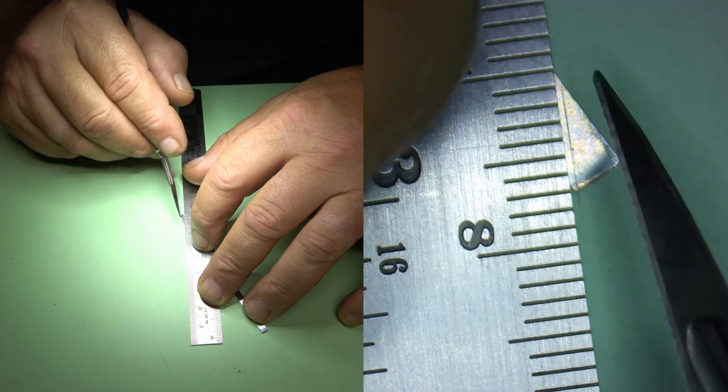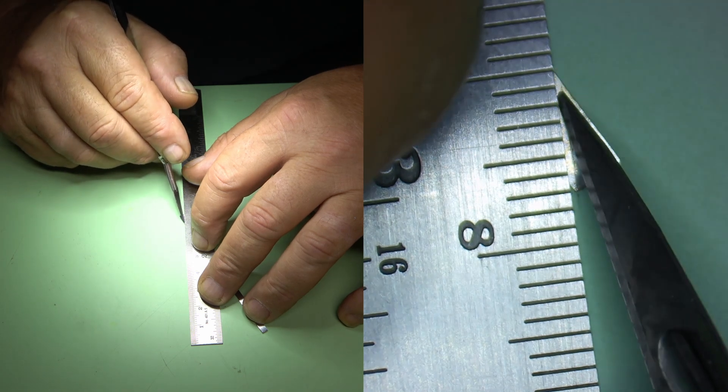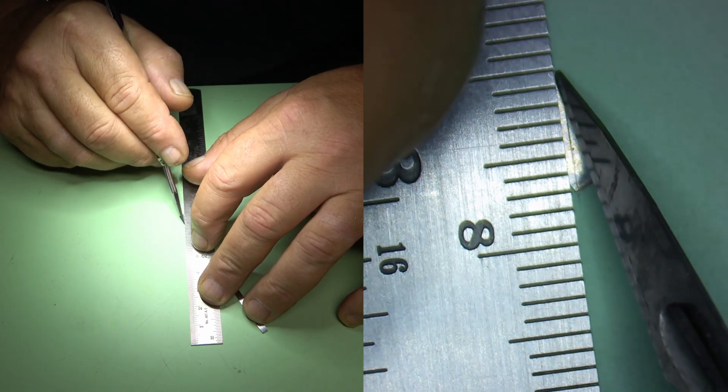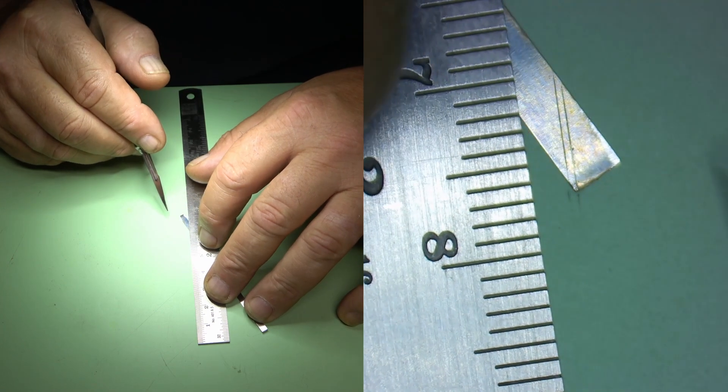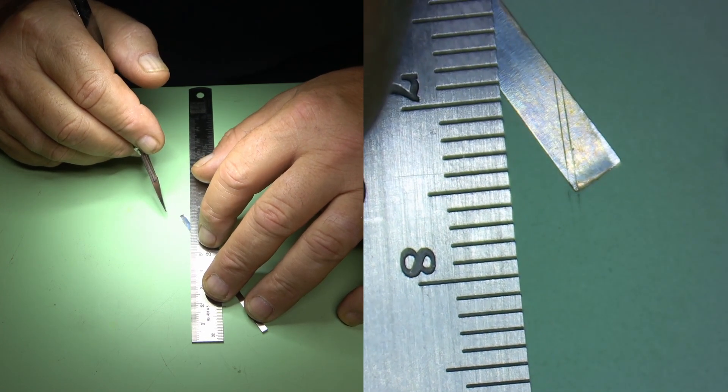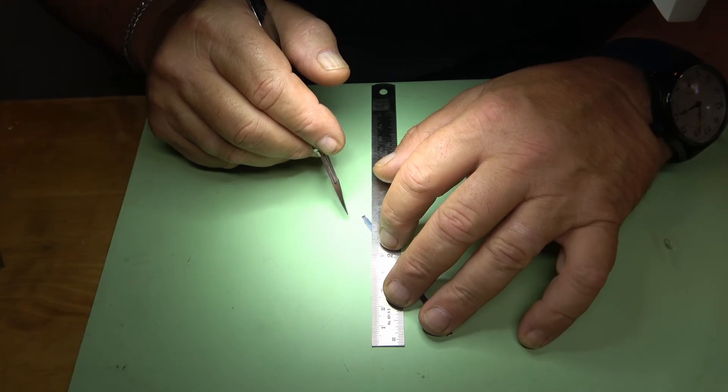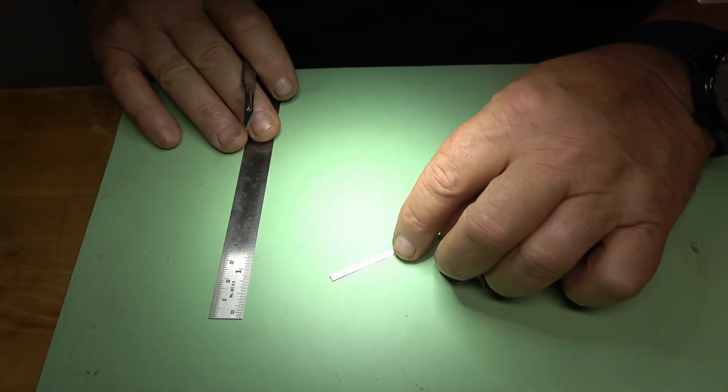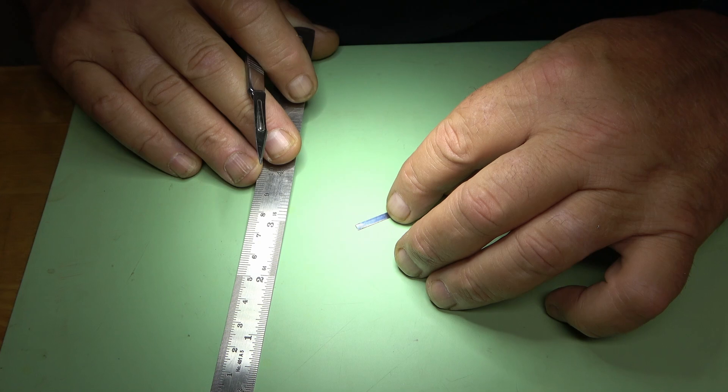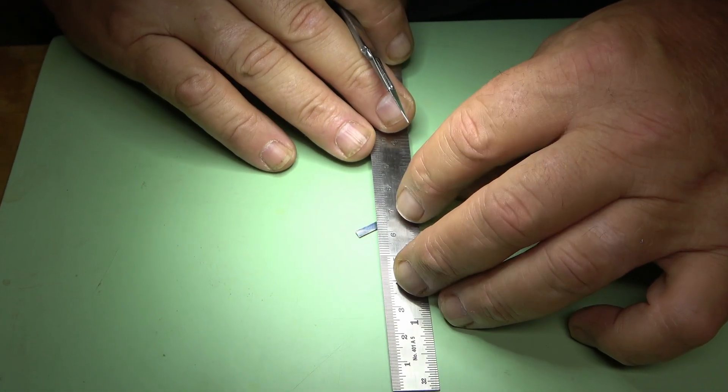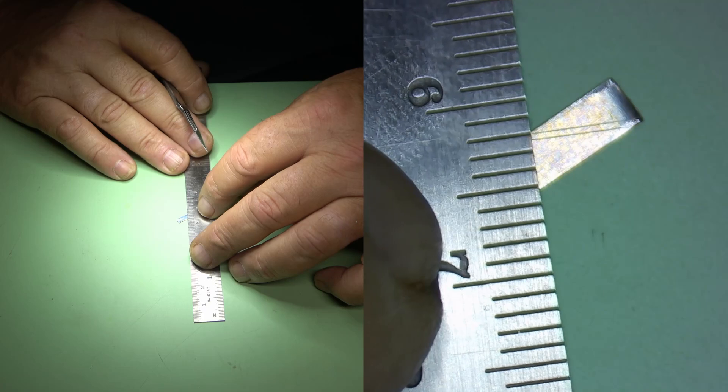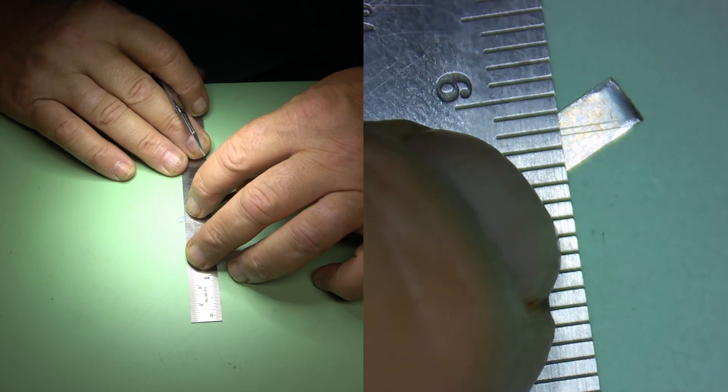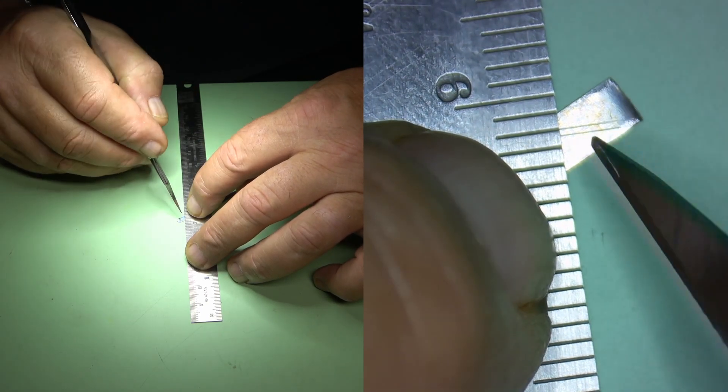Next, I'm just going to make a second line with the razor blade about one millimeter away. And these two lines are going to form the blade of the tool. Next, I'm going to make another line up about five to six millimeters from the tip of the mainspring blade. And this line is going to be at a 90 degree angle to the two lines that we just made.